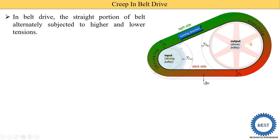When the belt is moved towards the tight side, some stretching takes place — some extension occurs, meaning the length of the belt increases. And when the belt is moved from the tight side to the slack side, contraction takes place, also called shrinking.